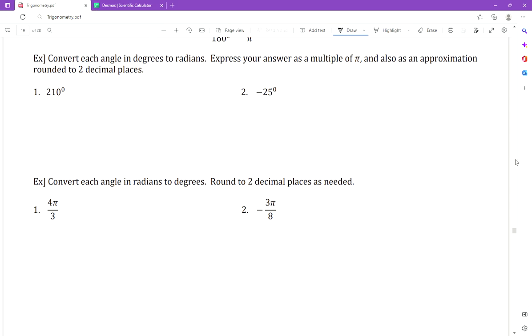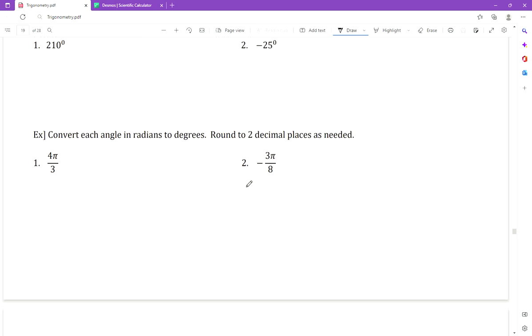Hi everyone and welcome to our video on converting radians to degrees. In this we've got the radian measure of 4π/3 for number one and number two is -3π/8. We'll also show it in our calculator.